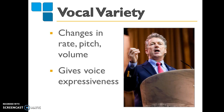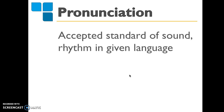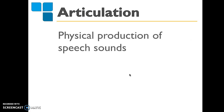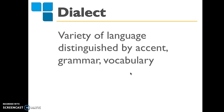This all comes down to vocal variety — one of the most important elements in effective delivery. It refers to the modulations in the rate, pitch, volume, and timing of a speaker's voice. Speakers who possess strong vocal variety come across as lively, dynamic, and communicative. Also make sure you're pronouncing things correctly. Pronunciation is another vocal feature that influences the outcome of your speech. Articulation — the physical production of speech sounds — also impacts how the speech is received. You might also need to think about your dialect: a variety of language distinguished by accent, grammar, or vocabulary.